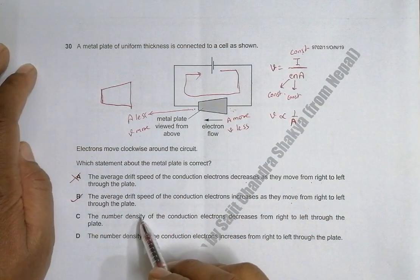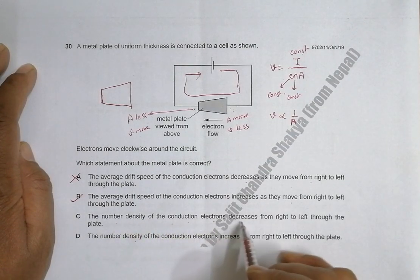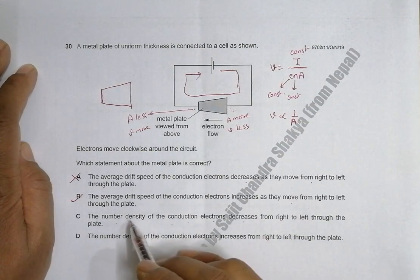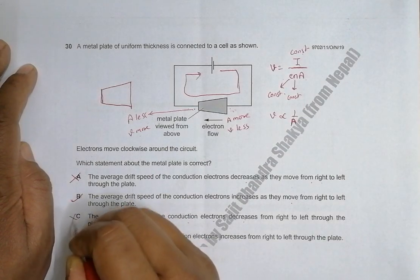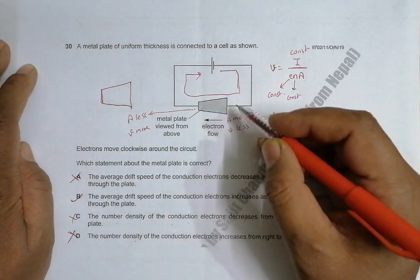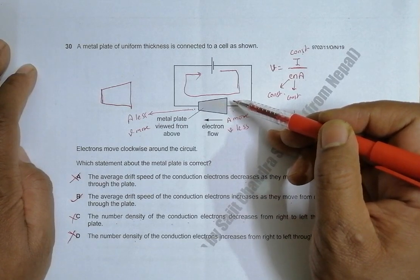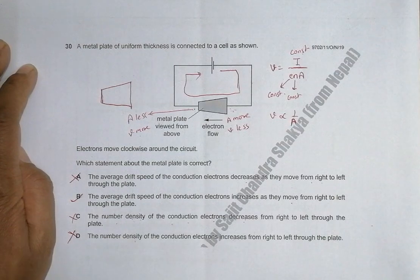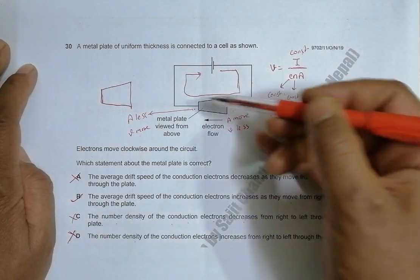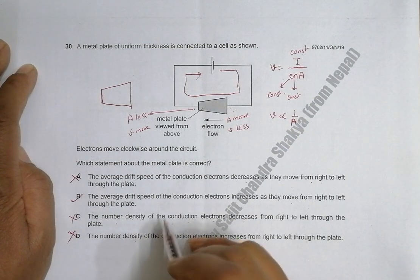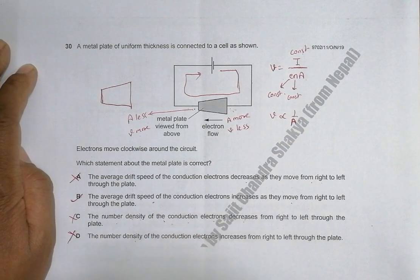The third and fourth choices say that the number density of conduction electrons decreases or increases, but that is not true. The number density n is the number of free electrons per unit volume, and that quantity is constant for a particular substance everywhere. Even though a larger cross-section contains more electrons in total, the per-unit-volume value remains the same, so both those options are incorrect.